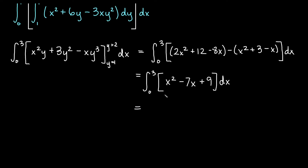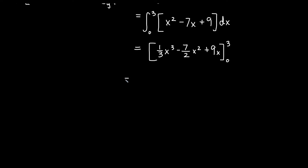Everything is single variable from here. We get one-third x cubed minus 7 over 2 x squared plus 9x, evaluated from 0 to 3. Plugging in 3: one-third times 27 gives 9, minus 7 over 2 times 9 gives 63 over 2, plus 9 times 3 gives 27. Plugging in 0 gives 0 in each term, so we get 9 minus 63 over 2 plus 27.